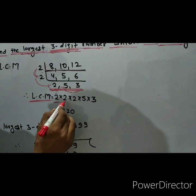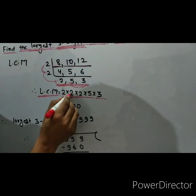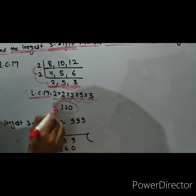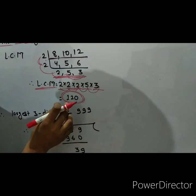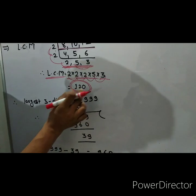Therefore, LCM is equal to 2 into 2 into 2 into 5 into 3. So 2 twos are 4, 4 twos are 8, 8 fives are 40, and 4 threes are 120. But it is a number which is divisible by 8, 10, and 12.